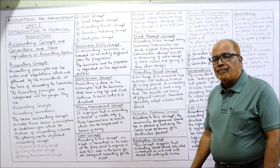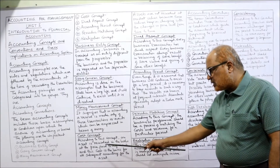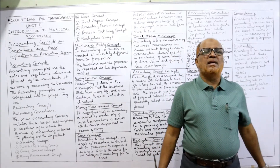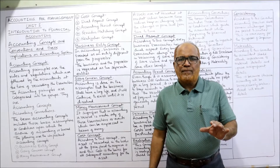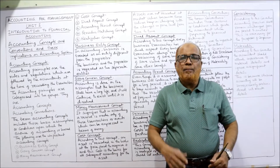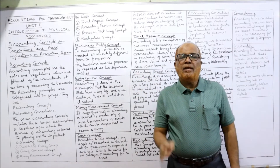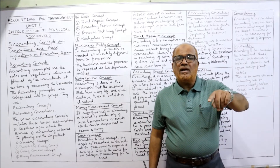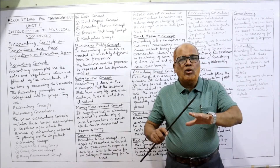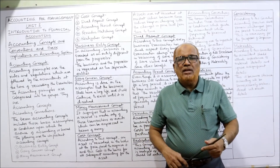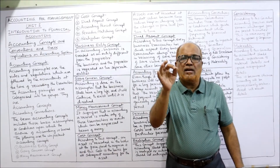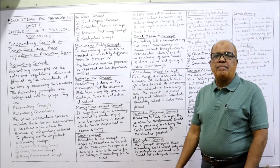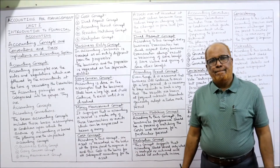Next is the cost concept. According to this concept, an asset is recorded in the books at the price paid to acquire it, and this cost is the basis for all subsequent accounting for the asset. The purchase price is recorded as the cost — not the market value. The market value of the asset may change due to external factors, but those factors are not considered in the books of accounts.